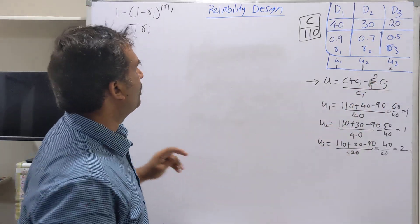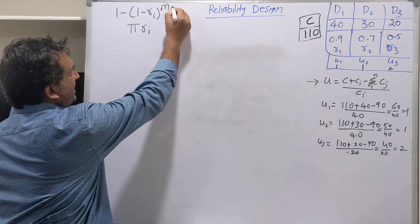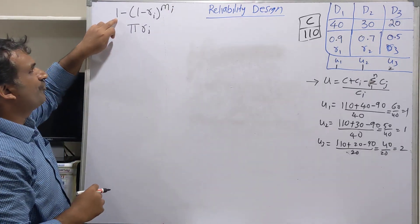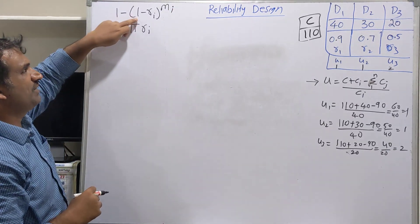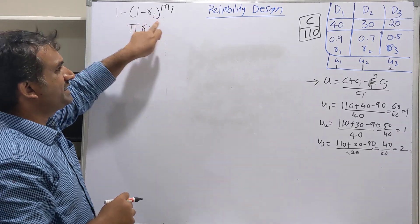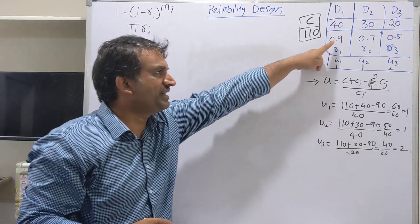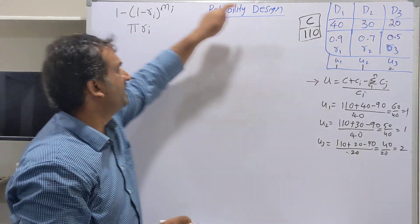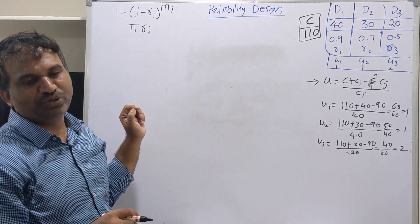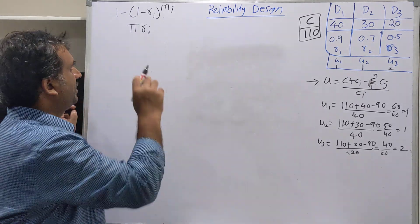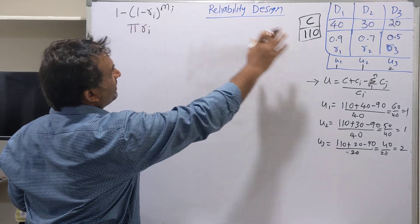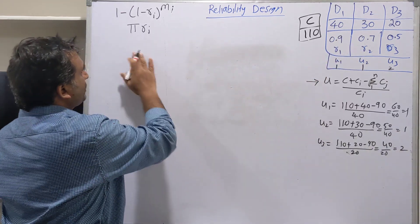The individual device reliability when duplicated can be calculated using the formula: 1 minus (1 minus Ri) to the power of Mi, where Ri is the individual device reliability and Mi is the number of copies duplicated. The system reliability is then the product of all individual device reliabilities.